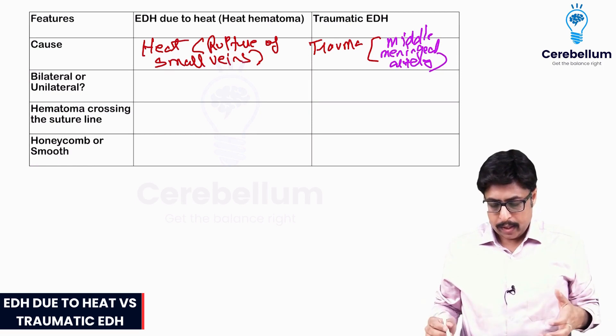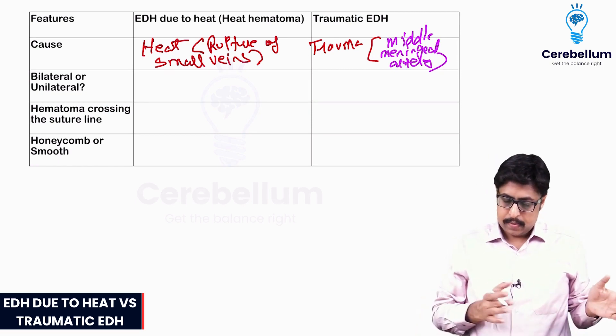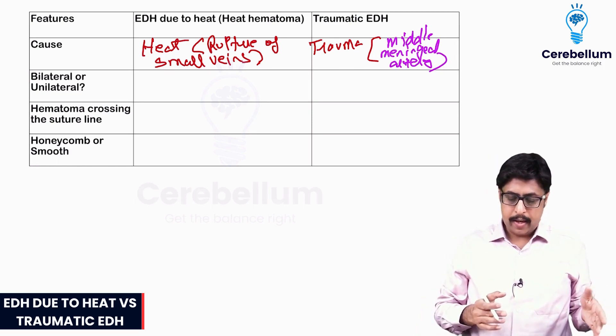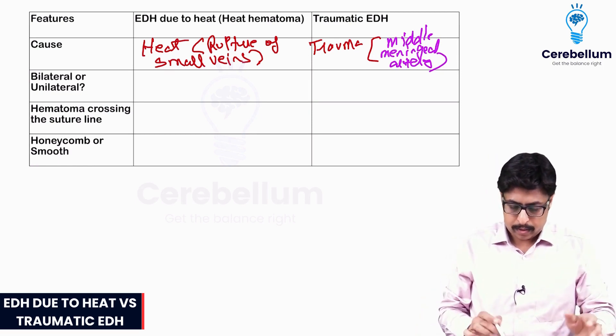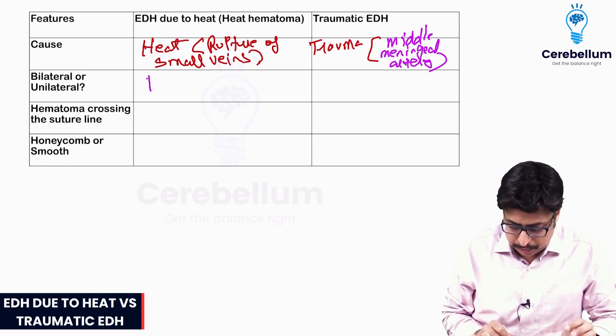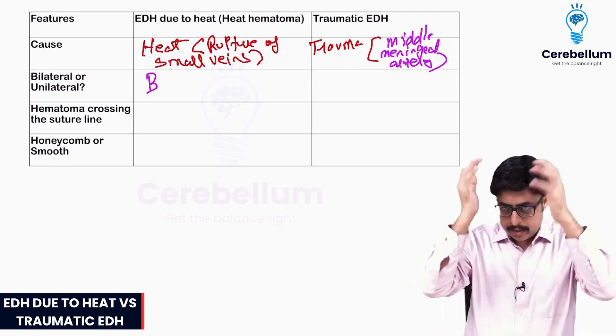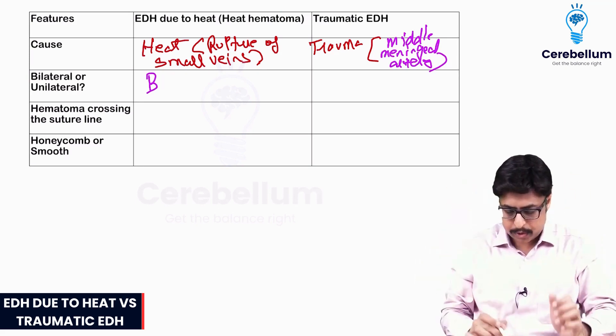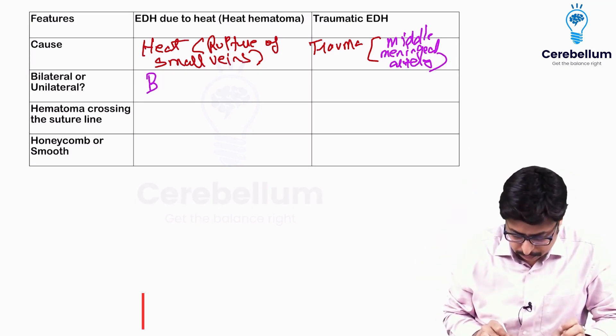Extradural hematoma due to heat — is it bilateral or unilateral? It is bilateral, because everywhere the blood vessels rupture bilaterally.